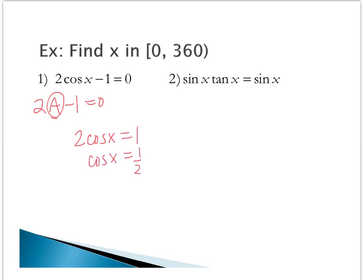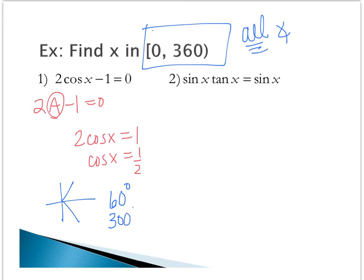Now that I've gotten my trig function by itself, I want to look at my angle restrictions. I want to find all angles anywhere on that first circle in 0 to 360 that would have a cosine ratio of 1 half. And we know that this happens in quadrants 1 and 4, and this would happen at our 60 degree and our 300 degree angle.